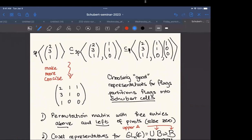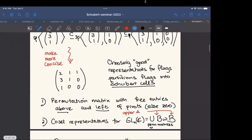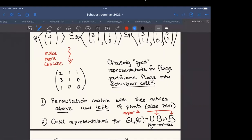So I can make this more concise just by stacking up all of these vectors into one matrix. Choosing good representatives for the flags partitions flags into Schubert cells. For our purposes, we will think about our Schubert cells as a permutation matrix with free entries above and to the left of the pivots, and zero everywhere else. If I wanted to think more intrinsically, I am picking coset representatives for double cosets of the general linear group with respect to the Borel subgroup of upper triangular matrices. The permutation matrix is the pivots and the index set of this double coset.